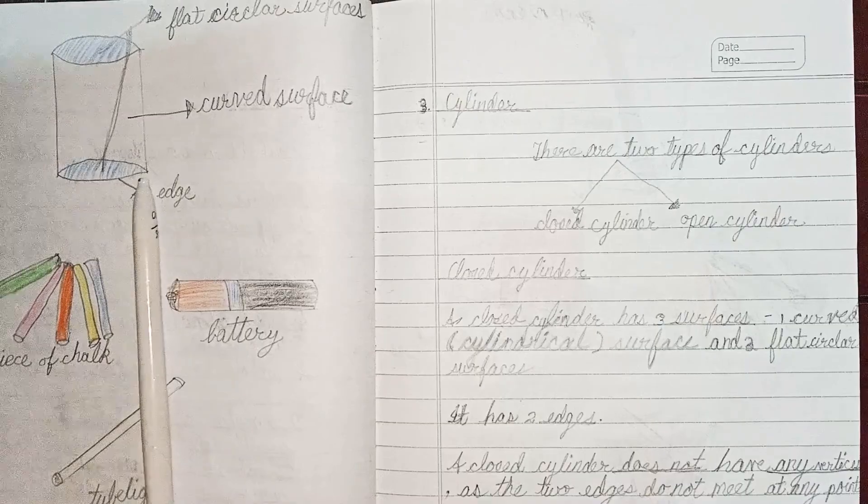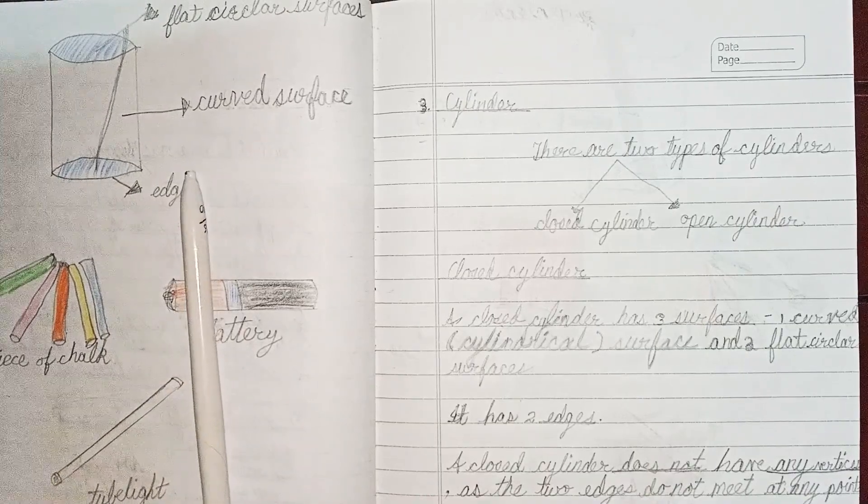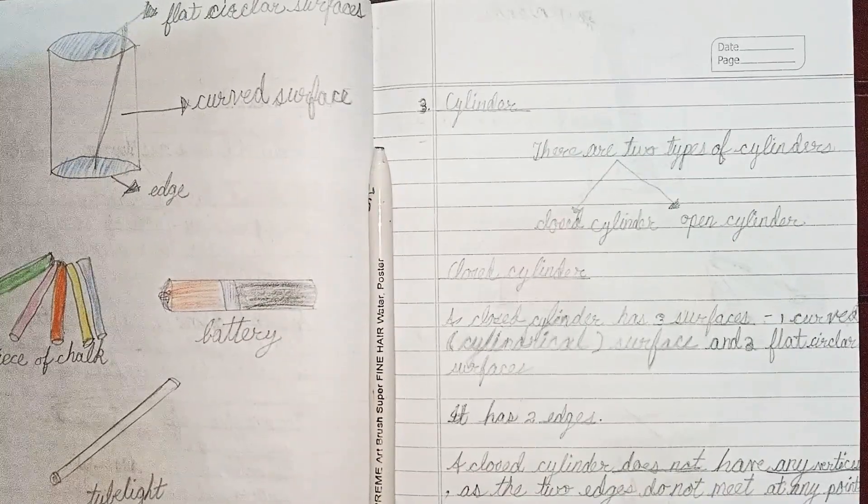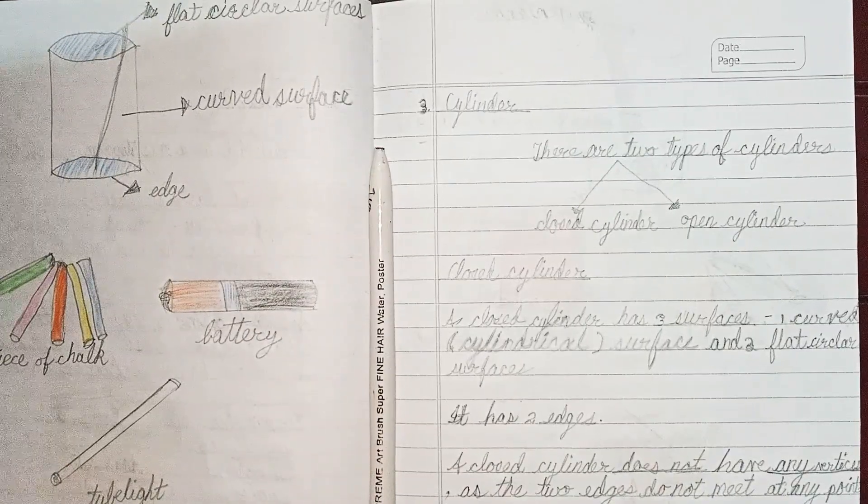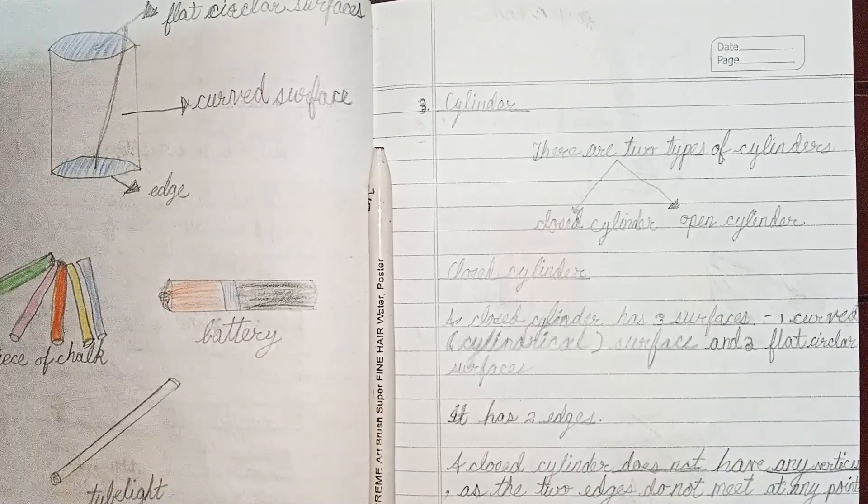It has two edges. A closed cylinder does not have any vertices as the two edges do not meet at any point. For example, chalk, battery, tube light, etc.